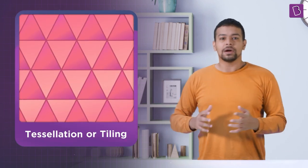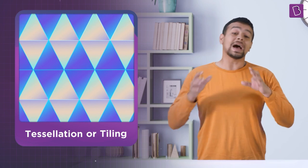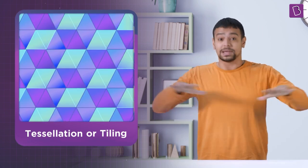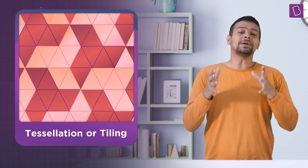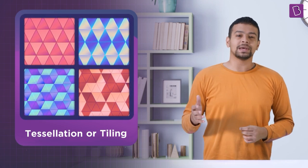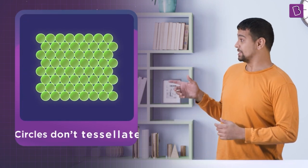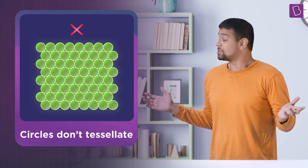Now when shapes are arranged in a repeating manner without leaving gaps on a plane, they make a tessellation. In other words, we can say that circles actually don't tessellate.